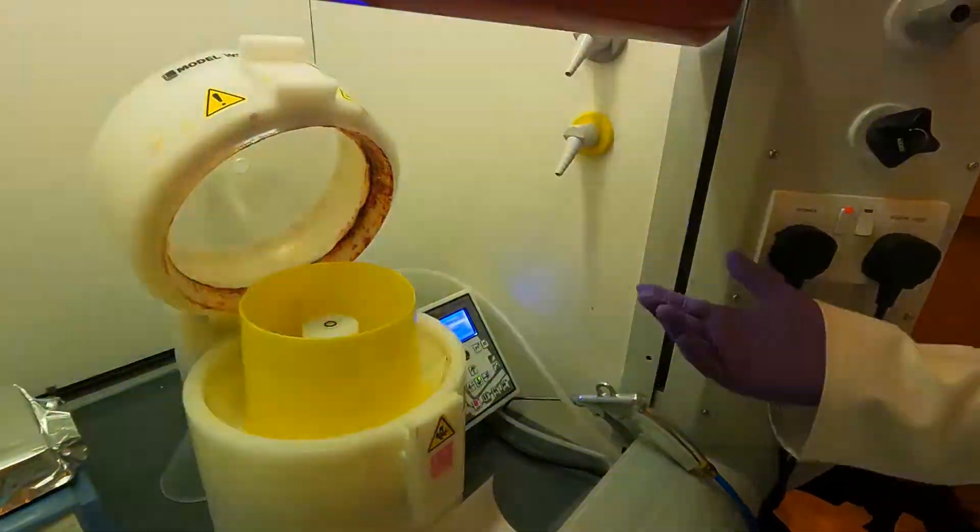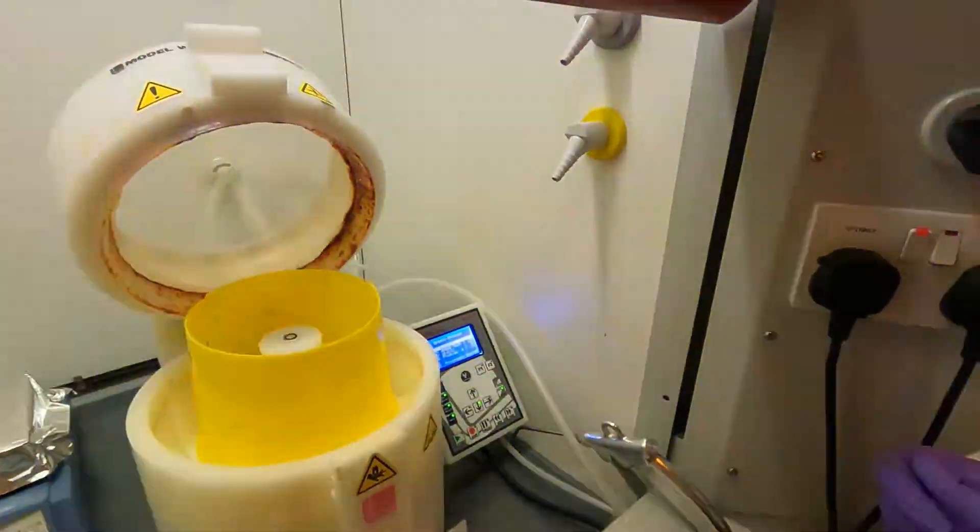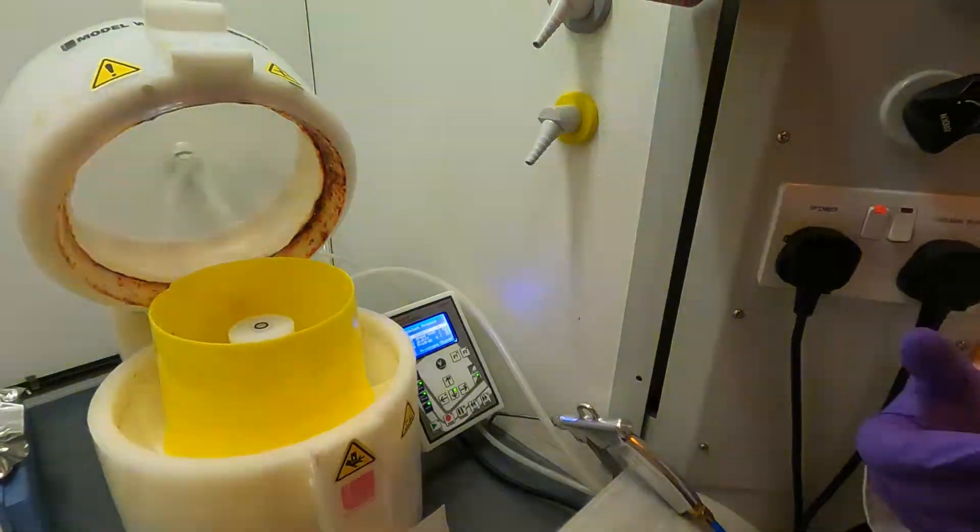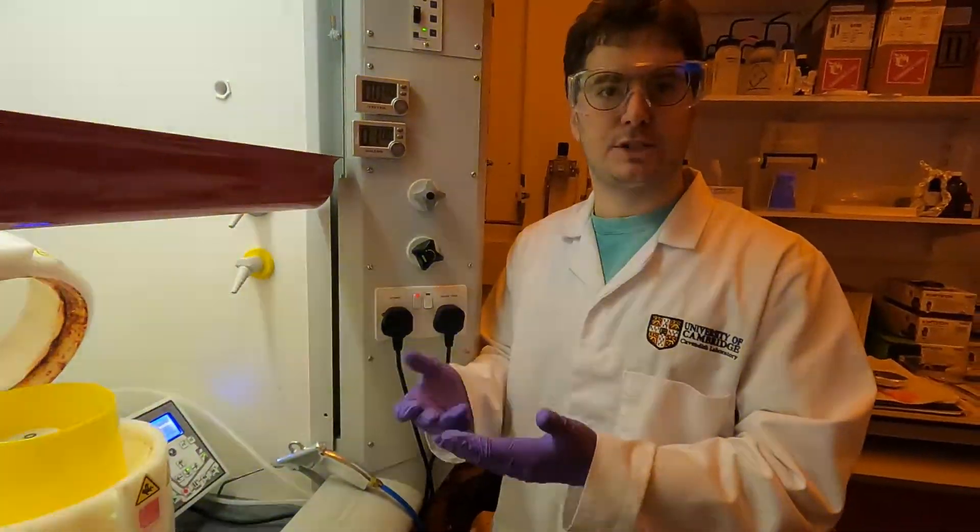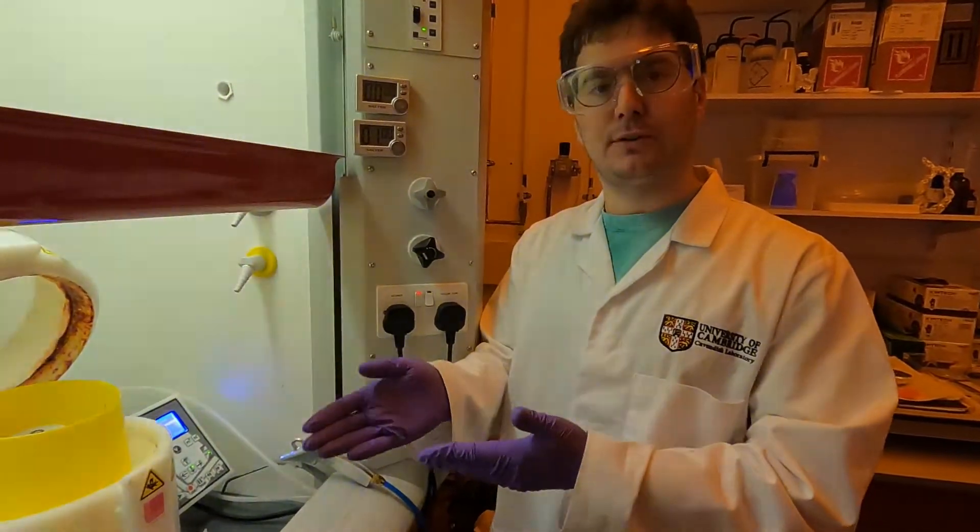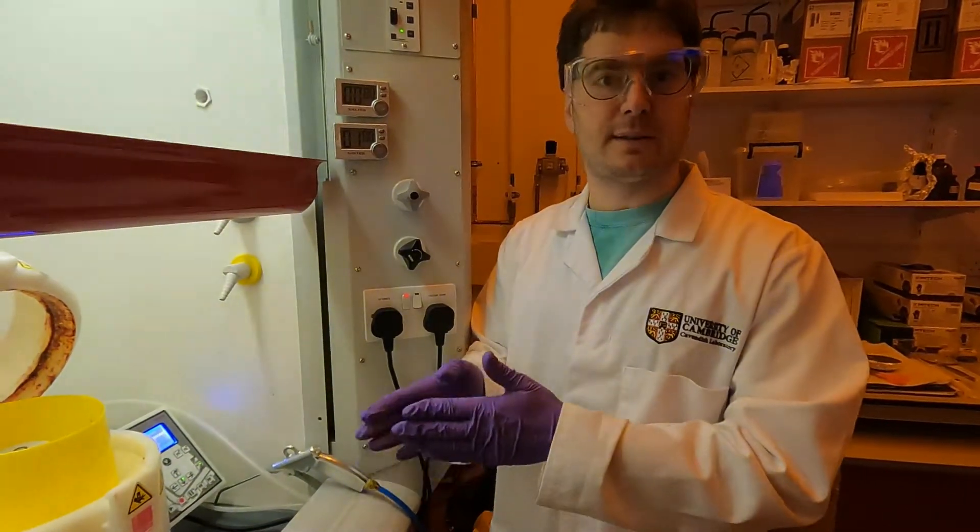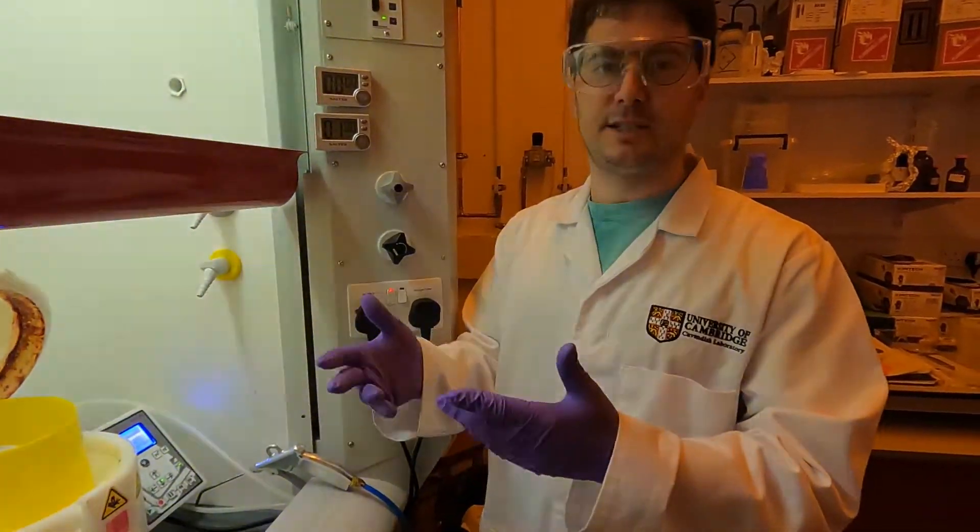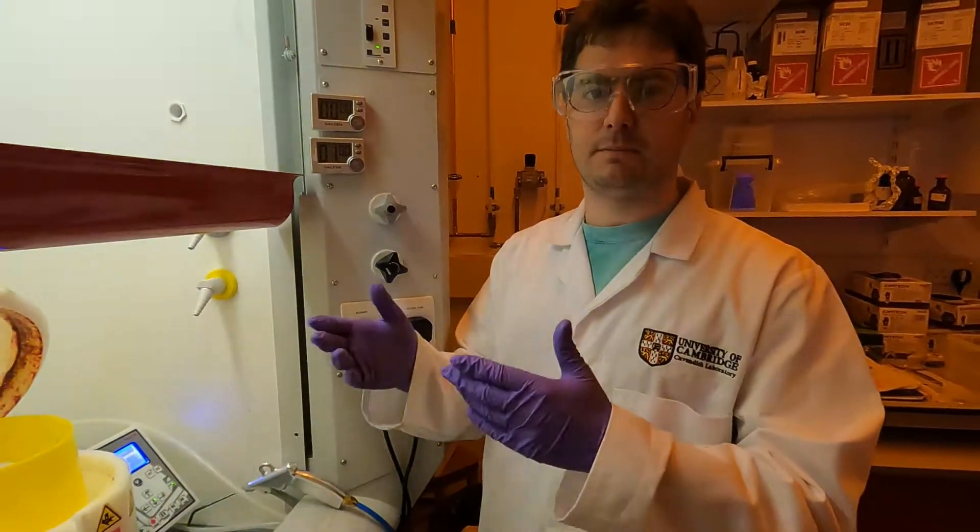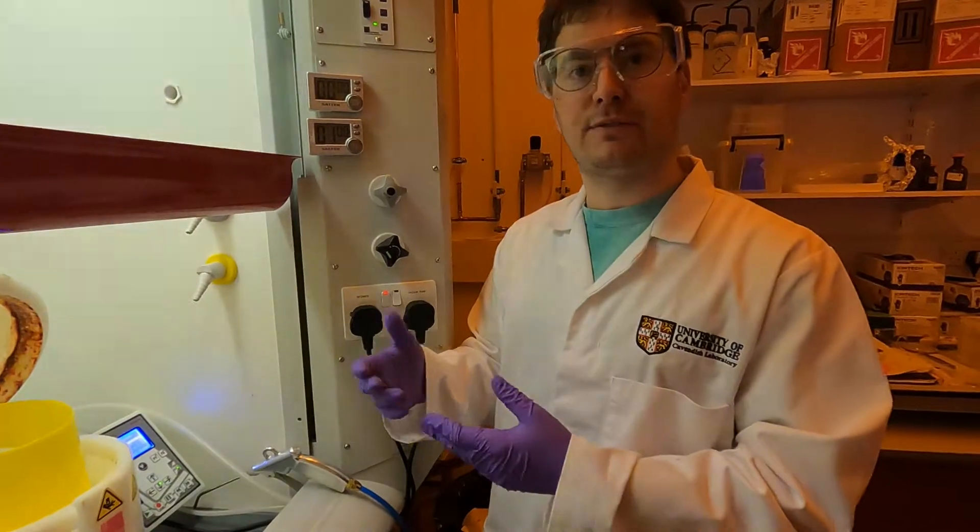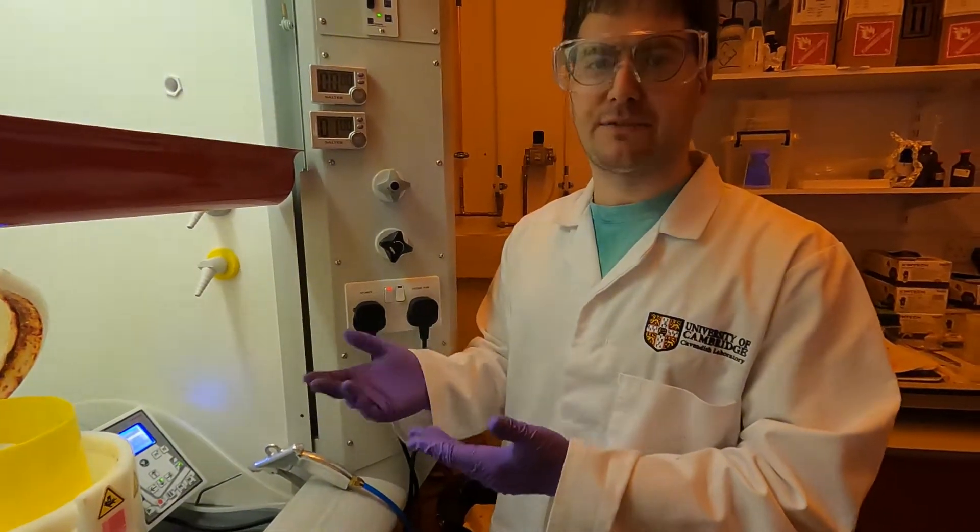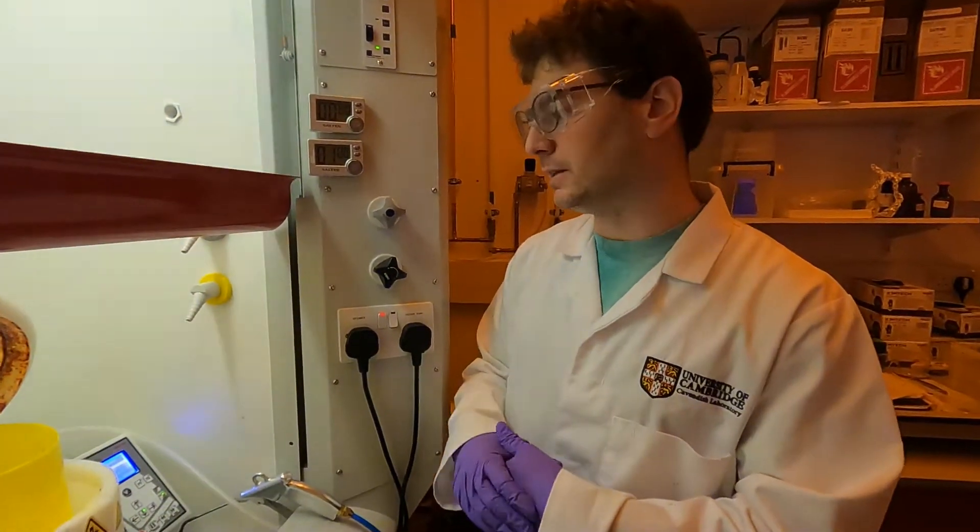The next step is to set the settings of the spin coater. The settings will depend on the type of process that you're running, so on the type of photoresist that you're using. For the experiment today we'll be using the SU8 2010, which nominally is designed for thicknesses between about seven and twenty micrometers, and we'll spin it at 1500 rpm which will give us a final thickness of about 15 micrometers.